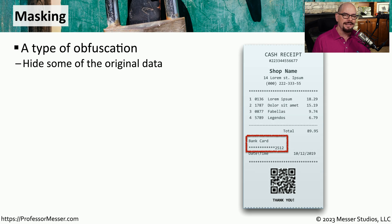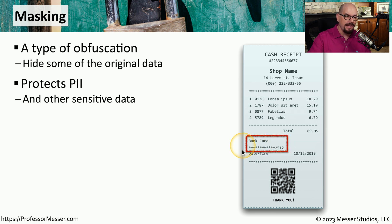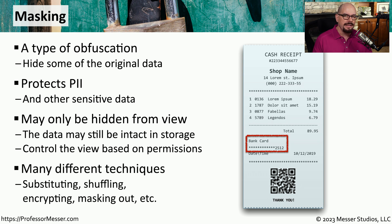Another type of obfuscation is data masking. Masking takes some original data and then hides some of that data to help protect it. Normally, this is used to protect personally identifiable information or perhaps sensitive financial details. For example, if you look at a receipt where you've paid with a credit card, you'll notice it may only show the last four digits of that bank card — the rest is masked, in many cases with asterisks. Behind the scenes, the company that processed the credit card can see the entire credit card number, but anything presented to you or to the end user would be masked with those asterisks. There are many different techniques that can be used to mask data — some information may be shuffled around, encrypted, or simply masked with asterisks.